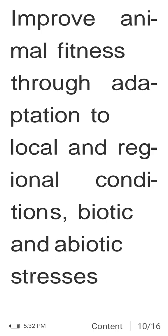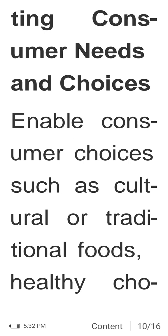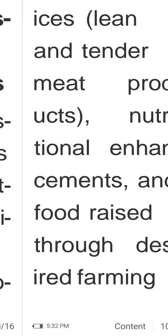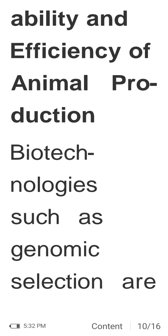Goals also include increasing animal fitness and improving animal welfare by adapting animals to local and regional conditions, biotic and abiotic stresses such as climate change, diseases, and pests, and optimizing the microbiome. Meeting consumer needs includes enabling choices for cultural or traditional foods, healthy choices, lean and tender meat products, nutritional enhancements, and food raised through desired farming practices such as organic and no-antibiotics-ever approaches.